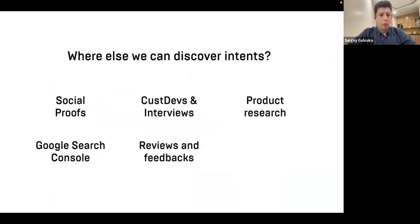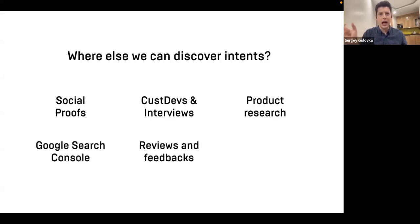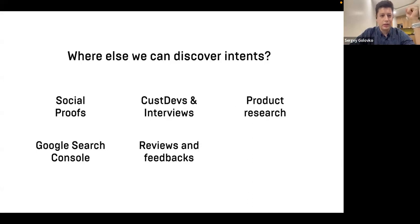Where else can we discover these user intents? Social proof is one source — we even developed an interaction metric in social: likes, shares, and comments divided by reach, showing interest in specific posts. We regularly rate our organic social activities to find posts that perform well, and that's how we discover insights. Interviews — both quantitative and qualitative research — can do a lot. Product research, which I'll share a case on. Google Search Console — we had a quite random but quite good case with that. And reviews and feedback, which I'm sure everyone here works with.